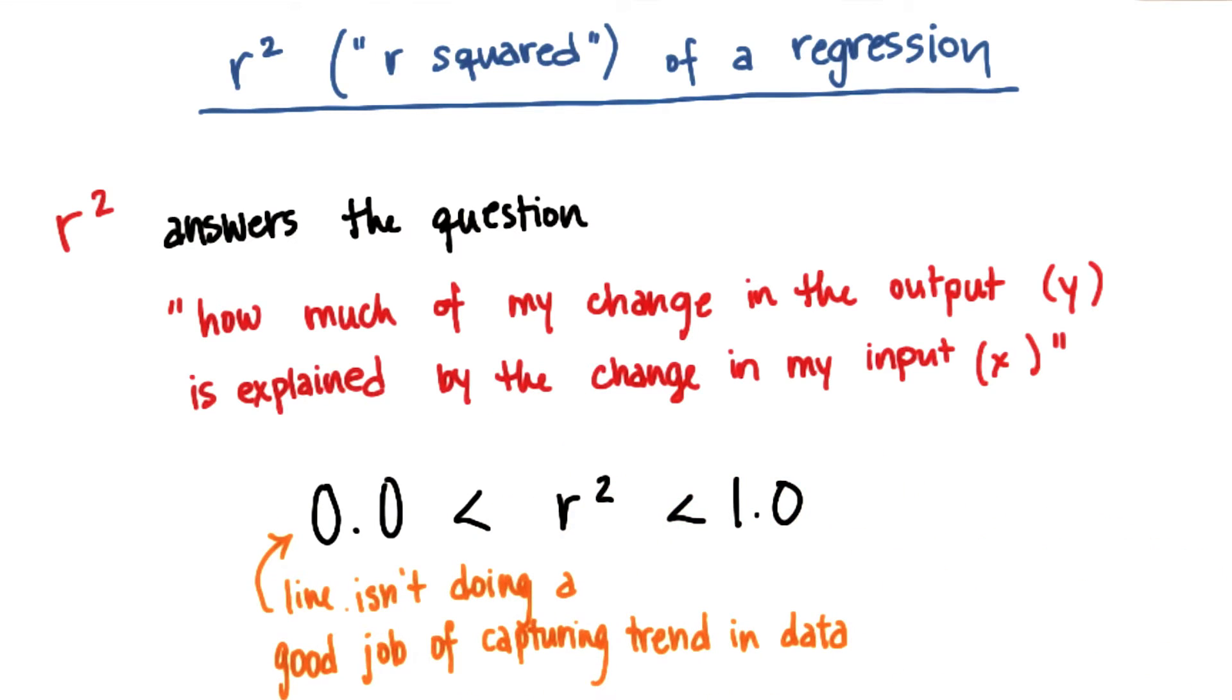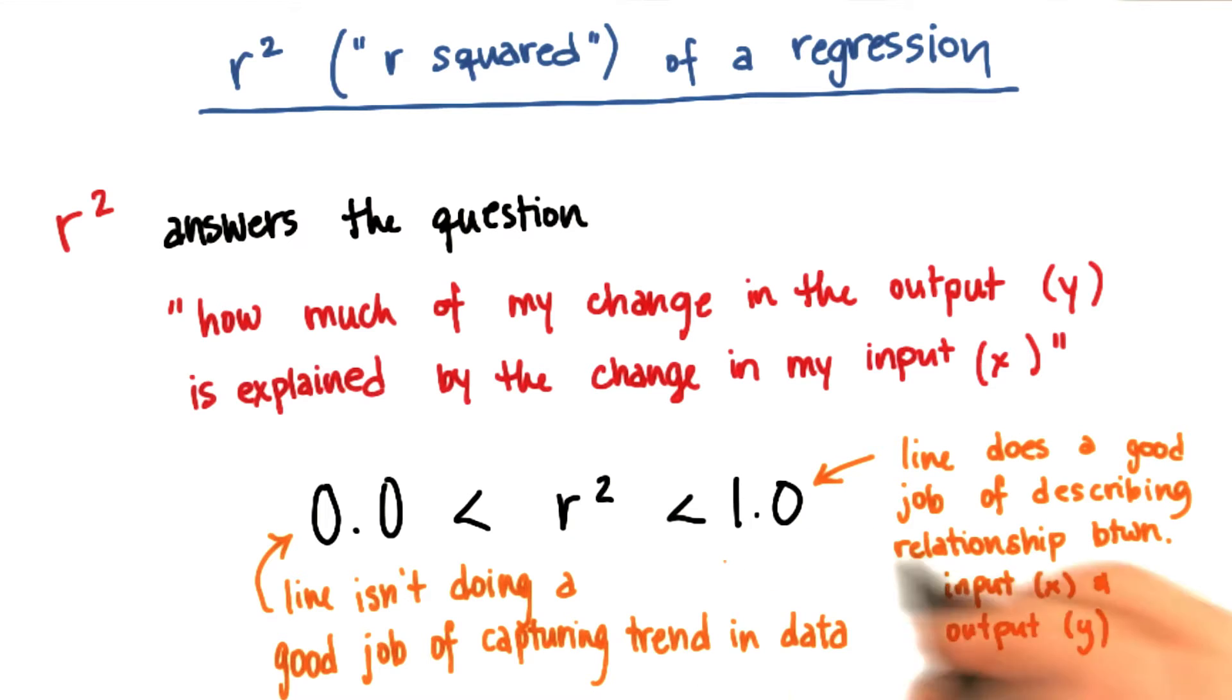If the number is very small, that generally means your regression line isn't doing a good job of capturing the trend in the data. On the other hand, if r-squared is large, close to 1, that means your regression line is doing a good job of describing the relationship between your input (x variable) and your output (y variable).